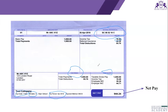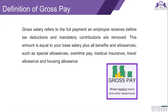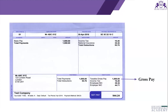Gross salary refers to the full payment an employee receives, including salary, overtime, and all allowances. In the UK, unlike India, there is no CTC structure where salary is divided into multiple components. In the UK, salary is one component, and anything paid on top — like overtime or car allowances — is an addition to that salary.